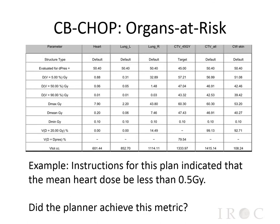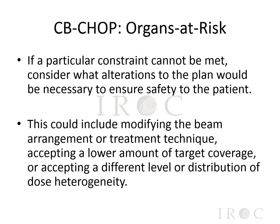In addition to dose volume comparisons, you might also wish to limit the mean dose to an organ at risk, which can be determined by looking at a table of doses provided by the dosimetrist. For example, instructions indicated that the mean heart dose should be less than 0.5 gray — and in this case the D-mean of the heart is 0.2 gray, which is lower than the intended instruction. If a particular constraint cannot be met, consider what alterations to the plan would be necessary, which could include modifying the beam arrangement, accepting lower target coverage, or accepting a different distribution of dose heterogeneity. Knowing when a plan is as optimized as it can be is a very difficult skill, but one that you'll slowly learn with time and repeated exposure.